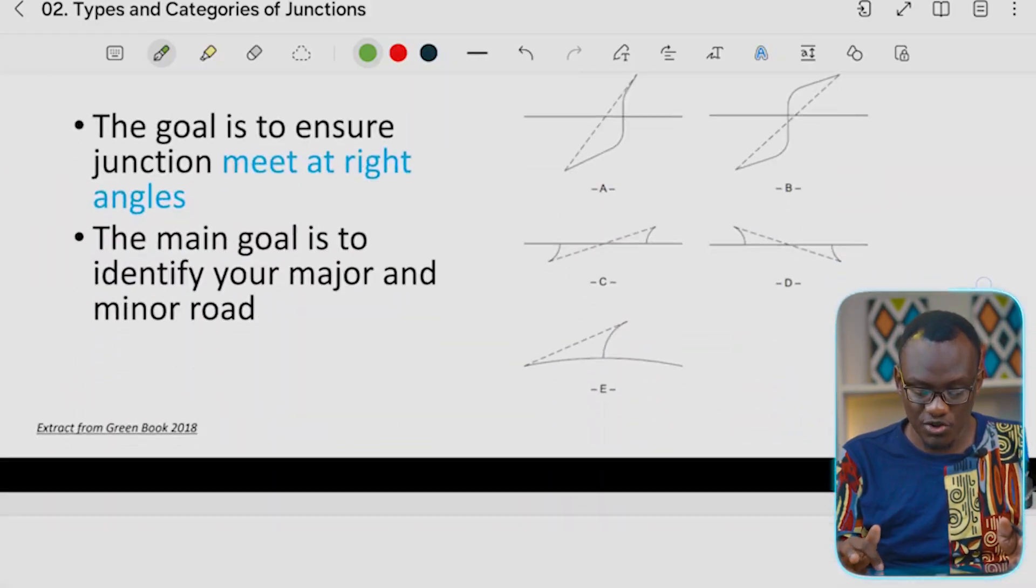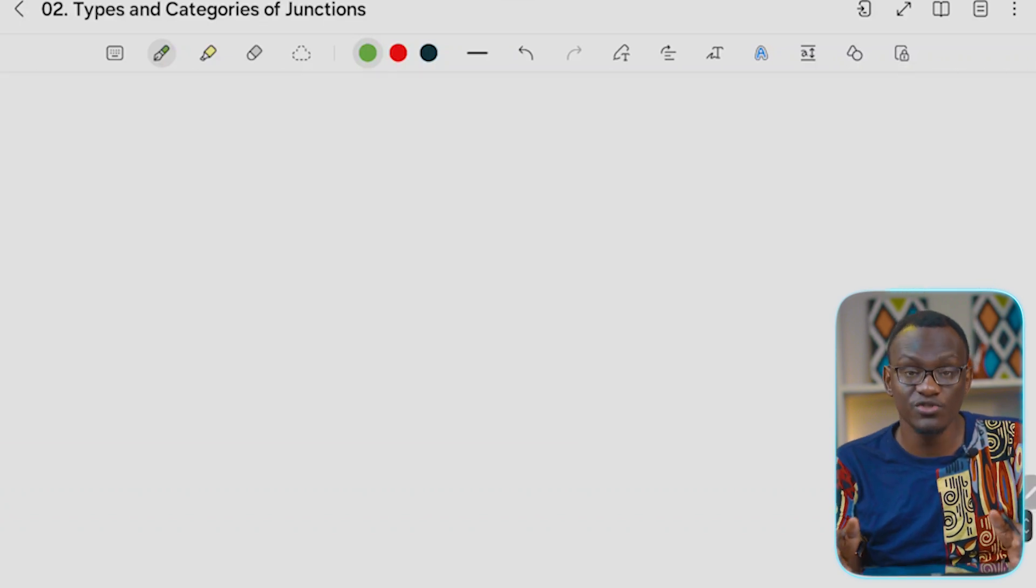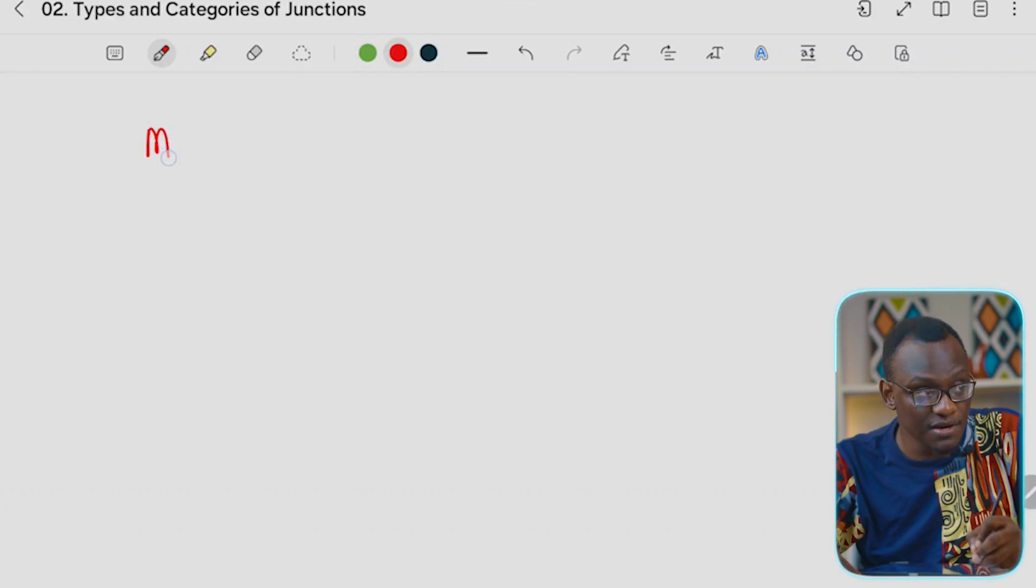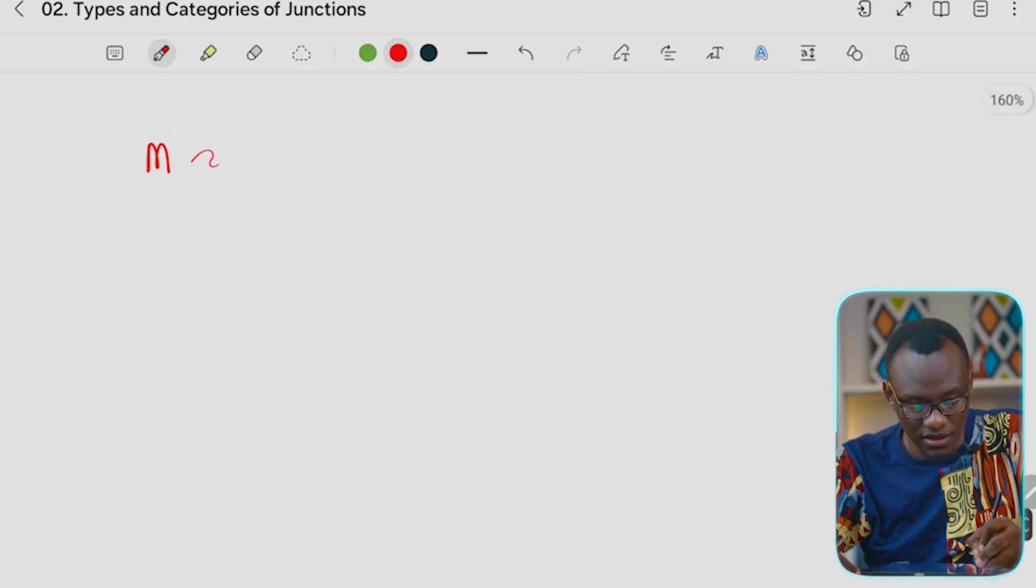Now in the workbook you are going to find over 10 junction exercises that you can do. The goal is, what do you consider? So before you start the junction exercise, I'm going to highlight to you what's very important. First of all, we have something called a major road and something we call a minor road.